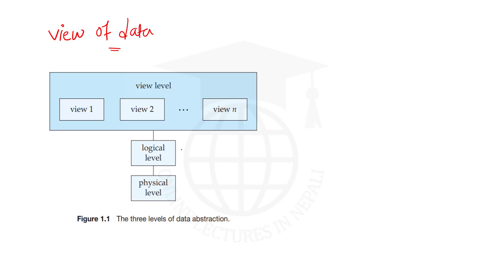This is the process of data abstraction. Simply, to simplify the interaction of user and database, the database management system hides some information that is not of the user's interest — which is called data abstraction. In database management systems, there are three levels of abstraction to simplify the interaction between the system and the user.